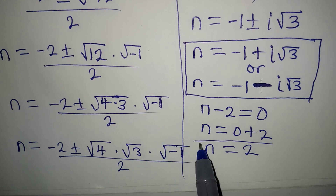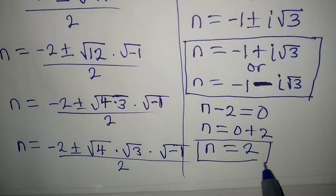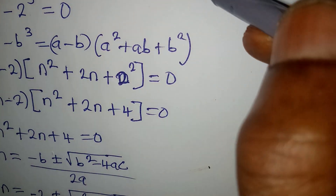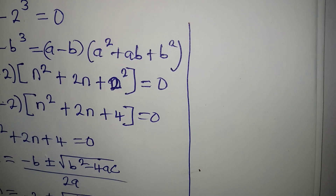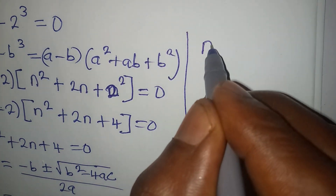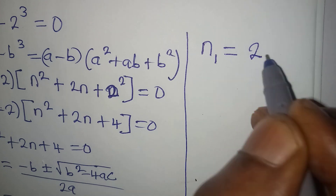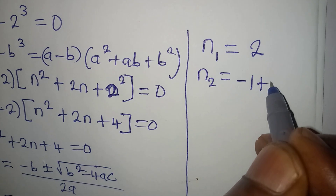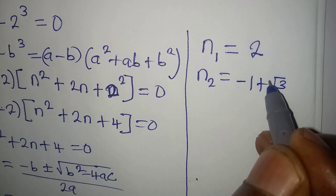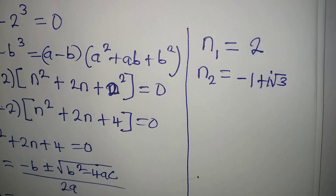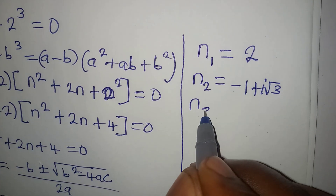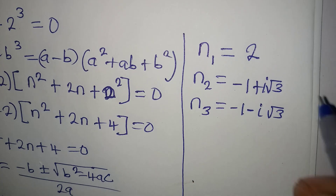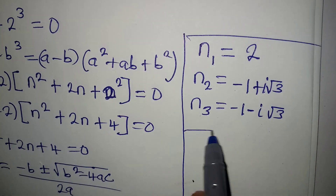This is the real solution to this problem. Now bringing all three solutions together: n1 is equal to 2, n2 is equal to minus 1 plus i square root of 3, and n3 is equal to minus 1 minus i square root of 3. So these are the three solutions to the equation.